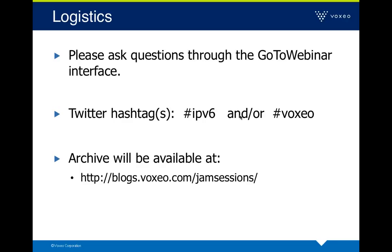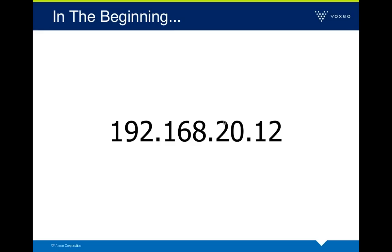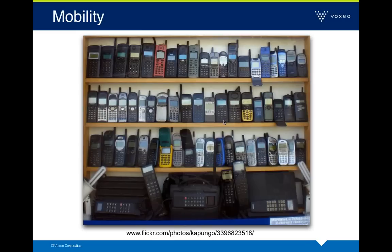So let's get started. Why IPv6? Let's set the stage. Since the beginnings of the Internet back in the 80s, we've had IPv4 addresses — 192.168.20.12, whatever it may be — four blocks of decimal numbers, or octets. But the challenge today is that there's a ton of people looking to connect devices to the Internet.